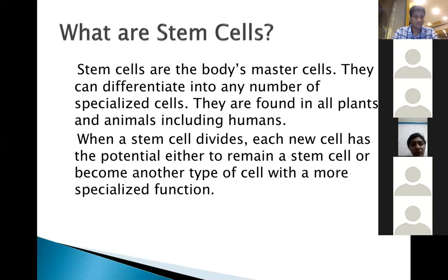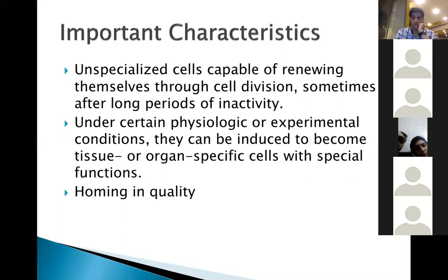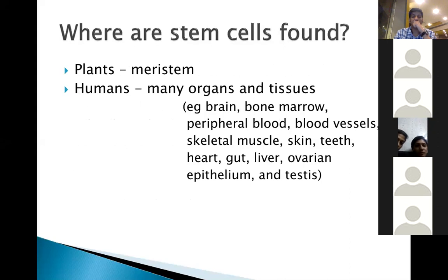A key quality of stem cells is that when they divide, each new cell can either become a stem cell or any other type of cell with a more specialized function. The important characteristics are that they have the possibility to repair and regenerate, which we've not seen before in medicine. Through cell division, sometimes after long periods of inactivity, they can get induced. They can home into the area which is damaged and therefore repair and regenerate. They are found in humans, in many organs and tissues, and the bone marrow transplant is one of the biggest examples of stem cells in practice.